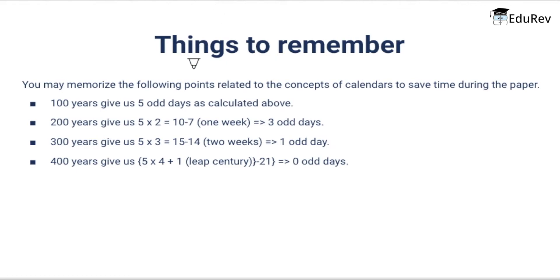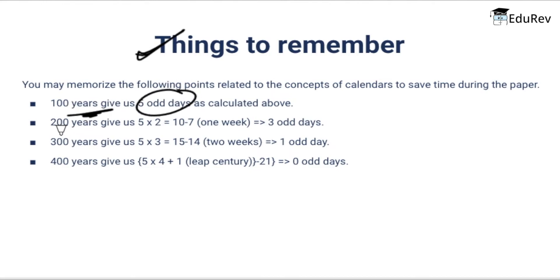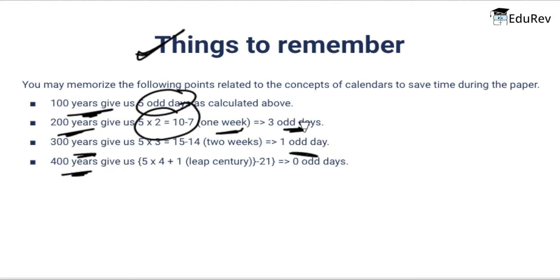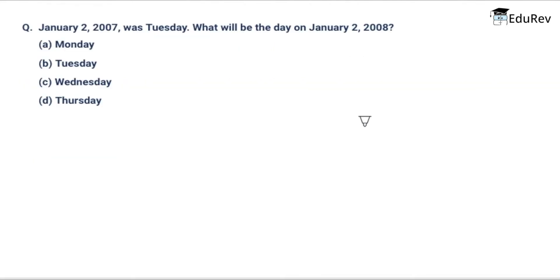Now, let's see things to remember. You may memorize the following points to save time during the paper: 100 years gives 5 odd days, 200 years gives 3 odd days, 300 years gives 1 odd day, and 400 years gives 0 odd days. Let's move on to the questions now.